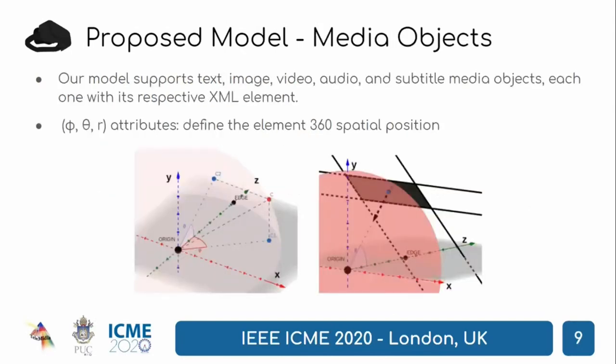In the current version, we support text, image, video, and subtitle media objects, each one with its respective XML elements. For positioning these elements in the 360 environment, we use a polar coordinate system in which the viewer is the center. The attribute phi specifies the horizontal angle, theta the vertical, and r the distance from the center. Also, the media object rotation makes it face the center, which is the viewer position.